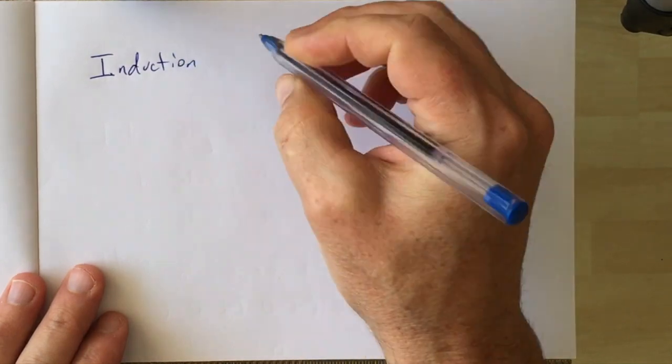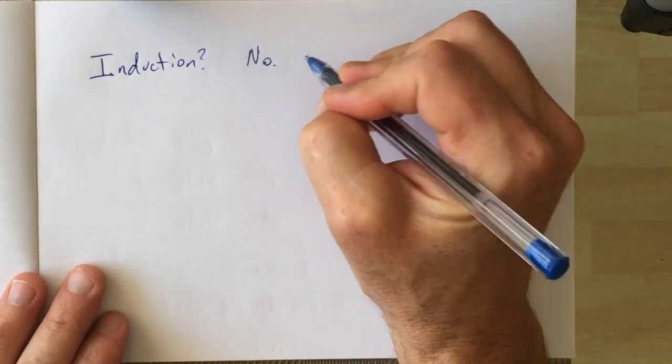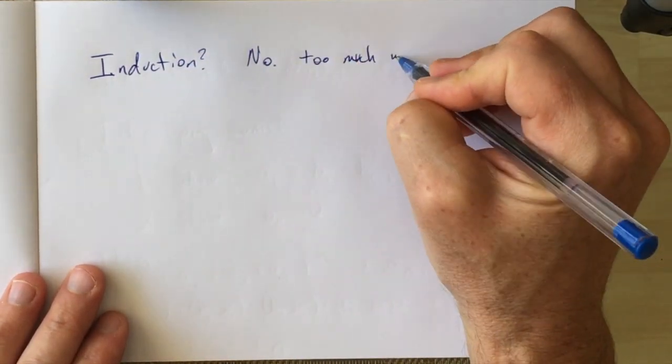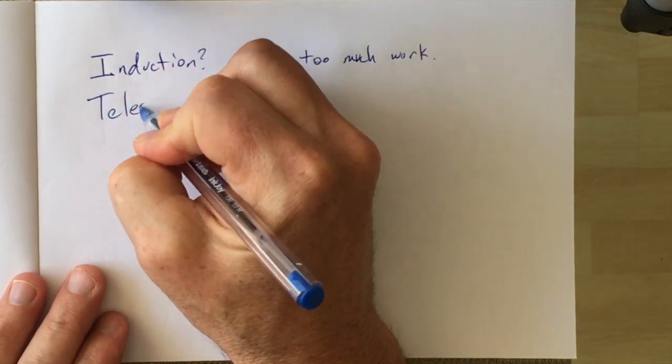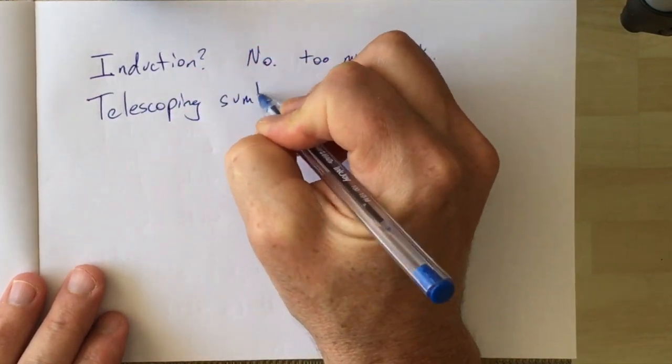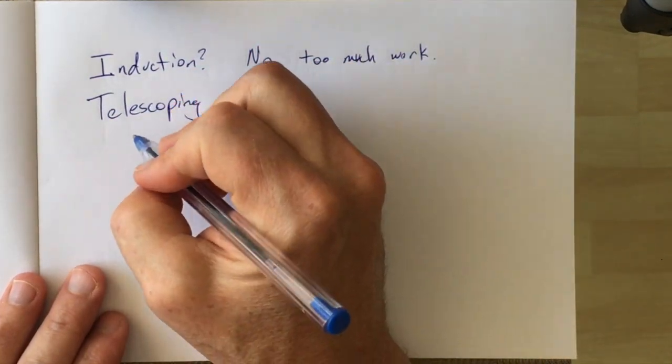So one way to do this is by induction, and certainly if you've taken a proofs class before then that's probably your best go-to tool. But another way of doing this is by telescoping sums.